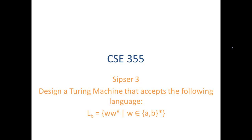In this video, we show how to design a Turing machine that accepts the following language. The language is LB, which is the set of strings W·W-reverse, where W is a string over the alphabet {A, B}. So this is the set of even-length palindromes — W concatenated with the reverse of itself.